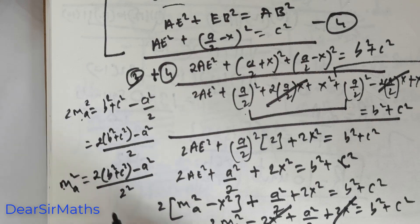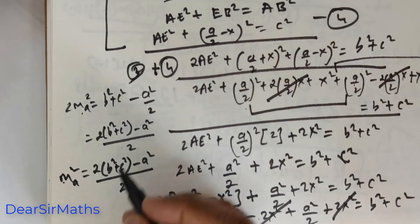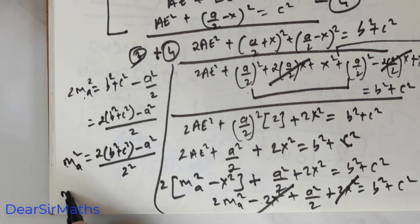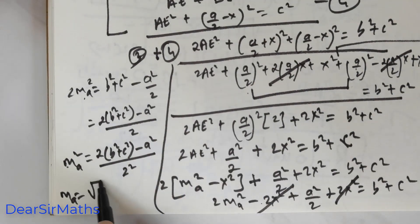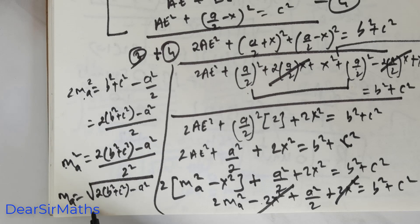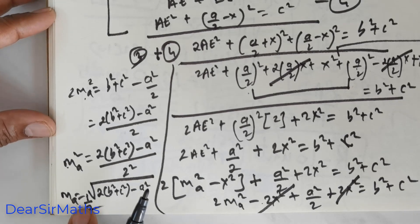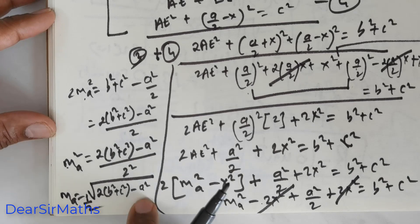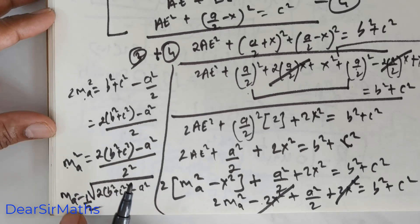This is M_A squared, but I need only M_A. So M_A equals one half times the square root of 2 times (B squared plus C squared) minus A squared. This is the length of the median — M_A equals half times square root of (2B squared plus 2C squared minus A squared). This is the length of the median drawn from vertex A.